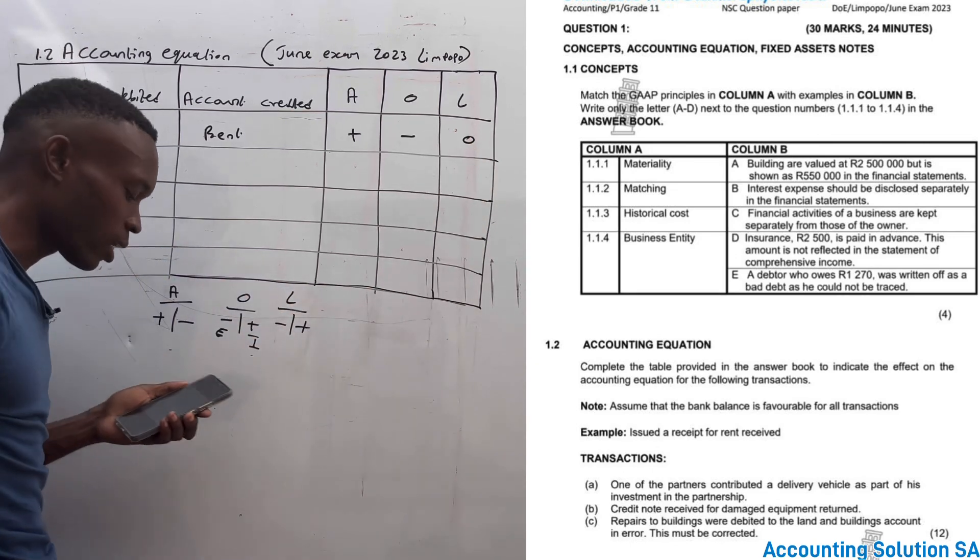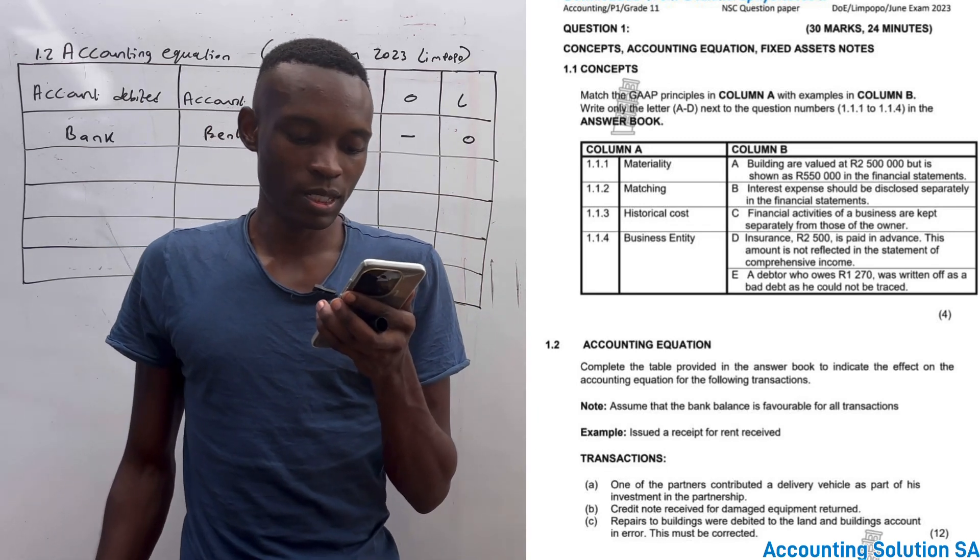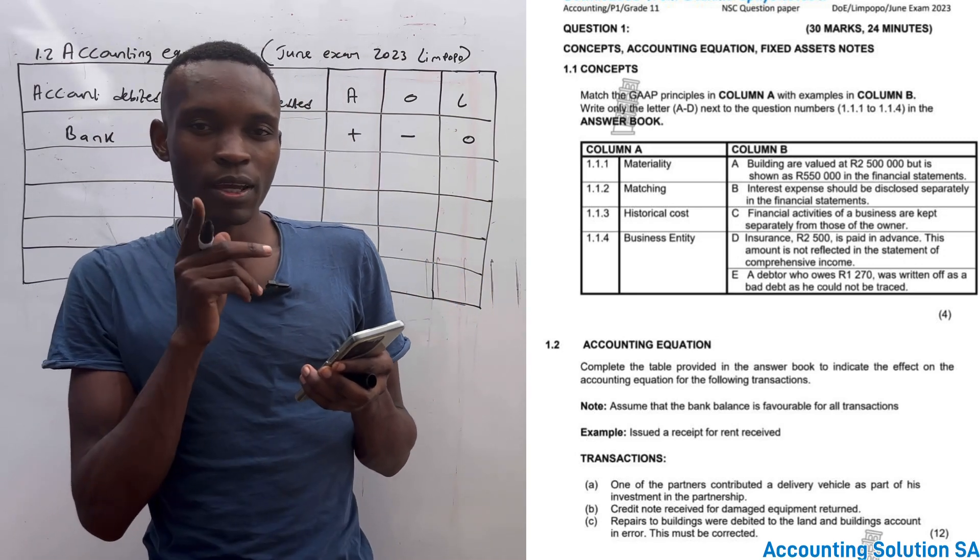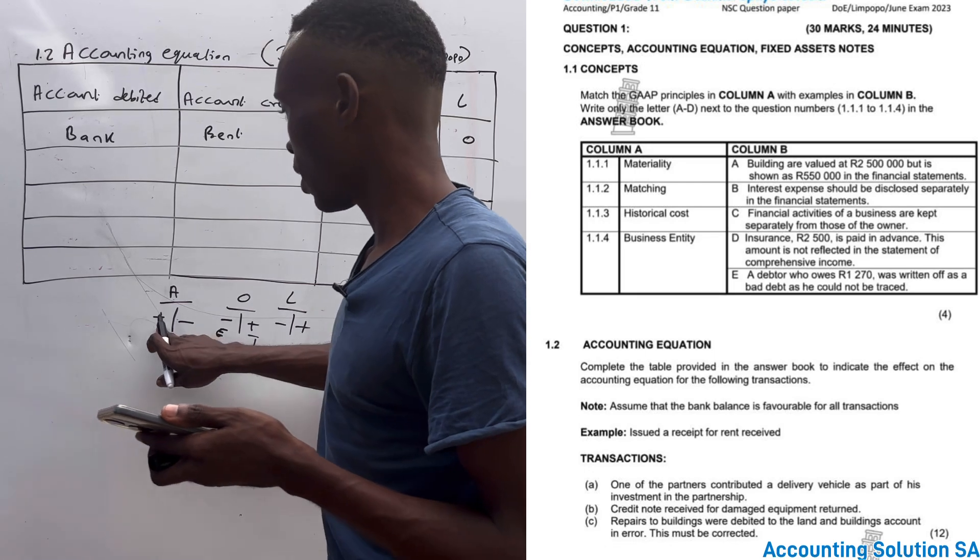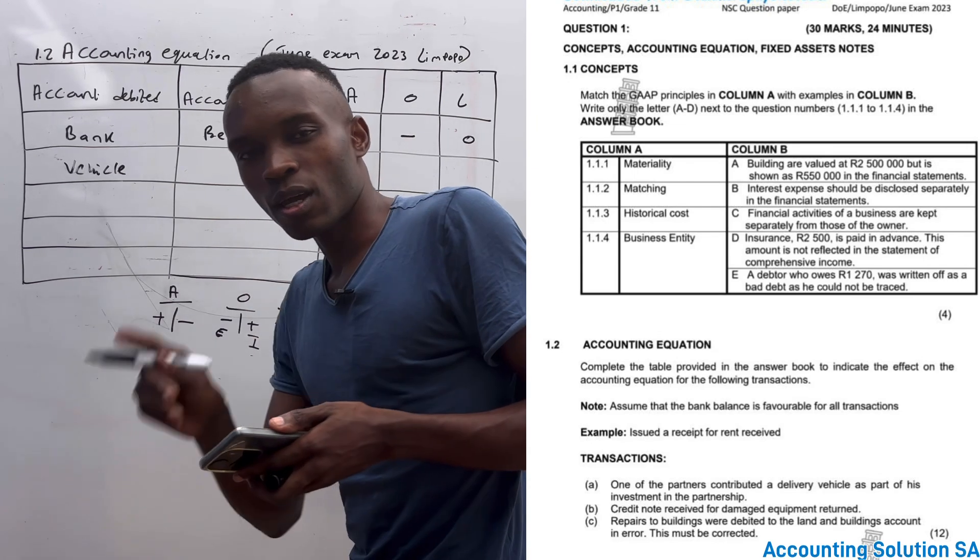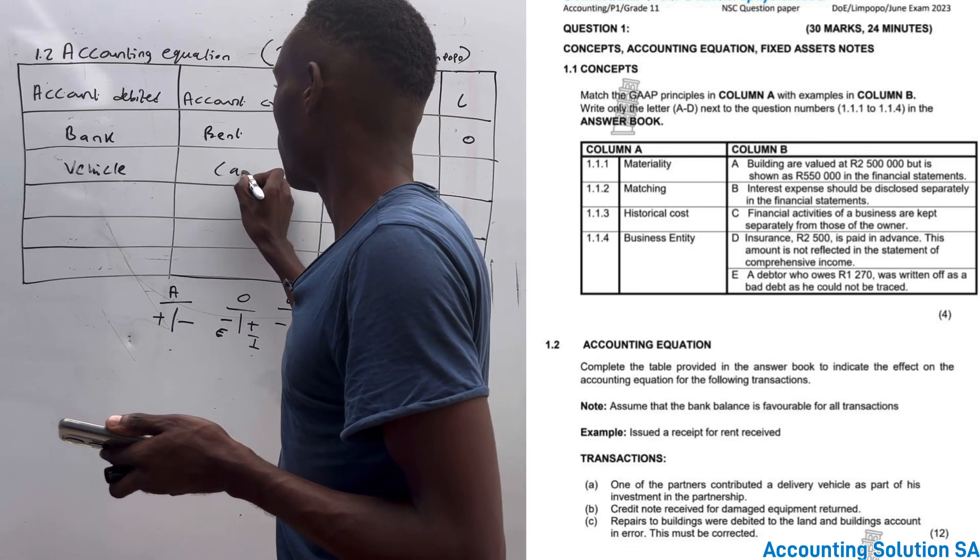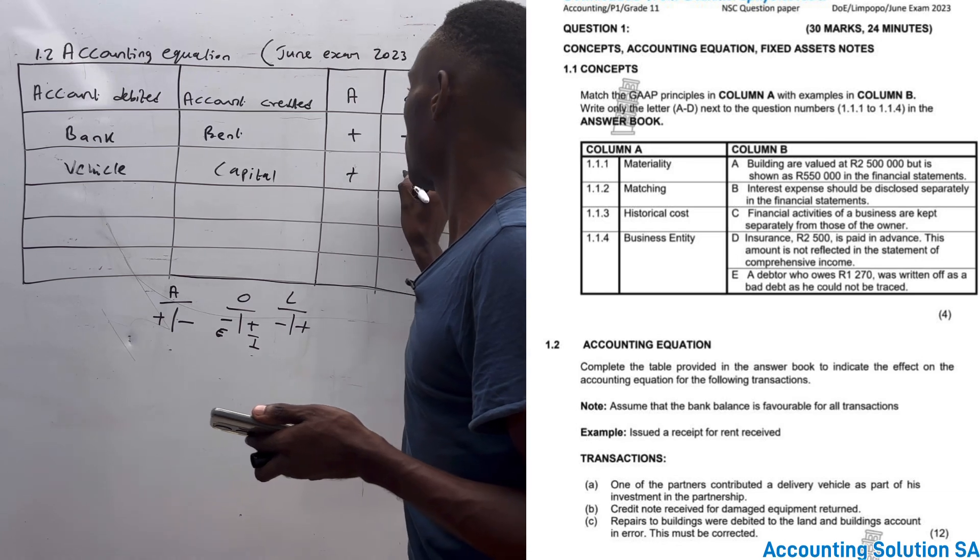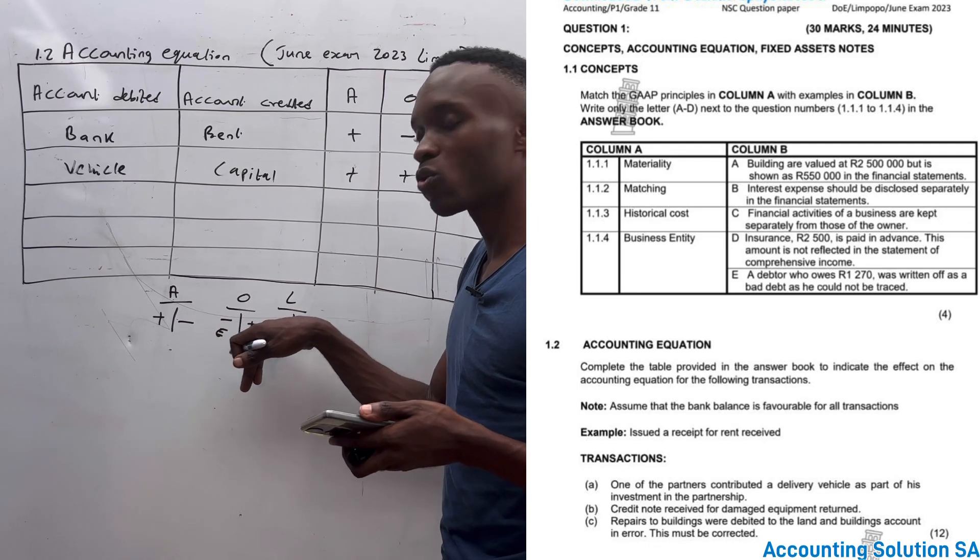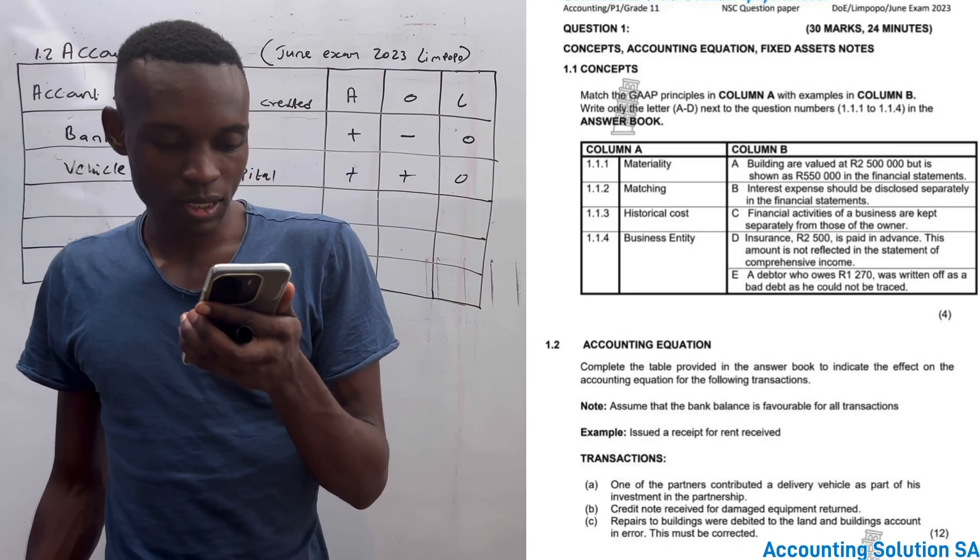Now let's go to transaction A. One of the partners contributed a delivery vehicle as part of his investment in the partnership. Company received vehicle - assets increase because company received a vehicle. And now the partner contributed, so it's capital, owner's equity increase. Which means that it's plus plus plus plus and unchanged. It's a plus because we debit asset and it's a plus because owner's equity we credit and the owner's equity increases on the credit.